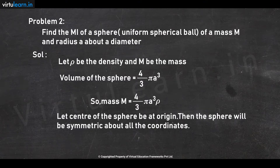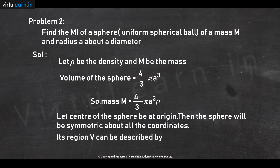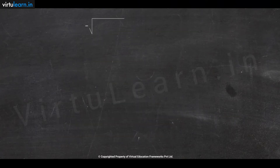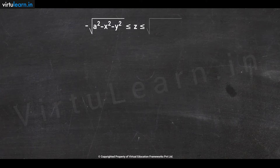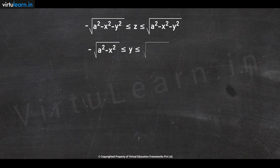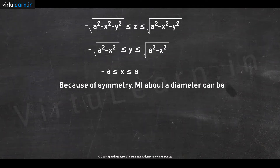Let the center of the sphere be at the origin. Then the sphere will be symmetric about all three coordinate axes. Its region V can be described by: minus root(a² − x² − y²) ≤ z ≤ plus root(a² − x² − y²), minus root(a² − x²) ≤ y ≤ plus root(a² − x²), and minus a ≤ x ≤ a. Because of symmetry, the moment of inertia about a diameter can be about the x, y, or z axis. In particular, we take the z-axis, so we compute I_z.